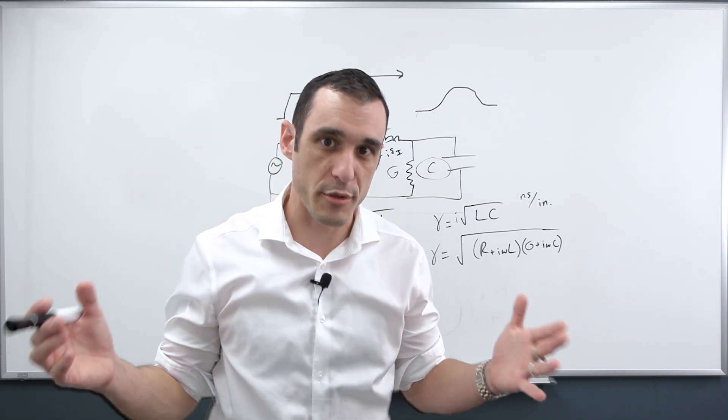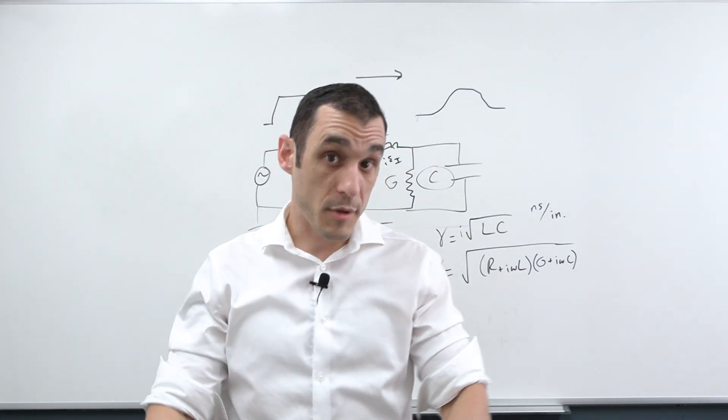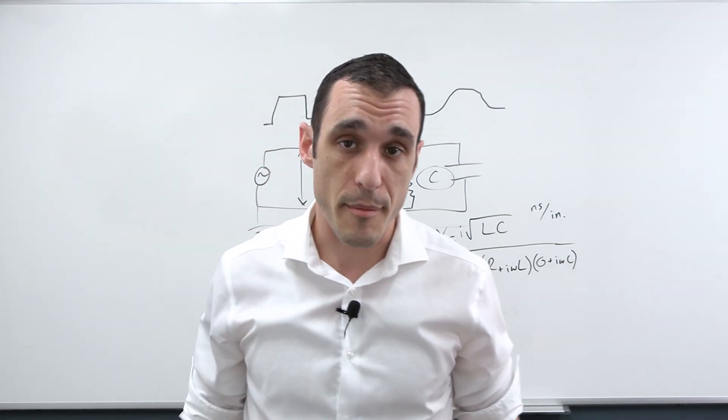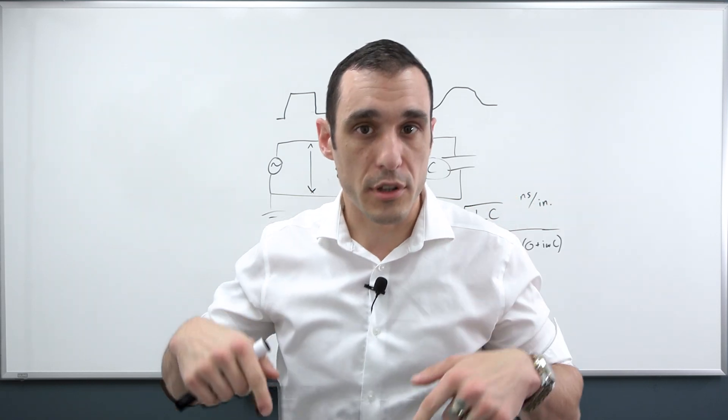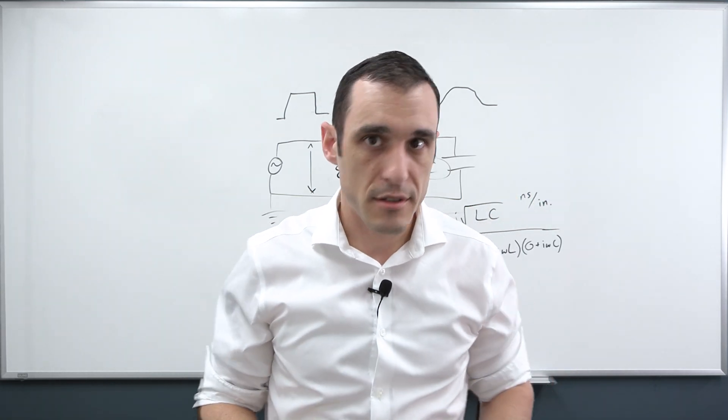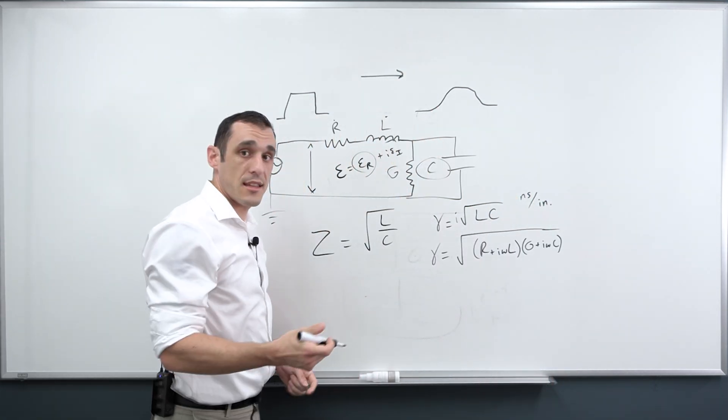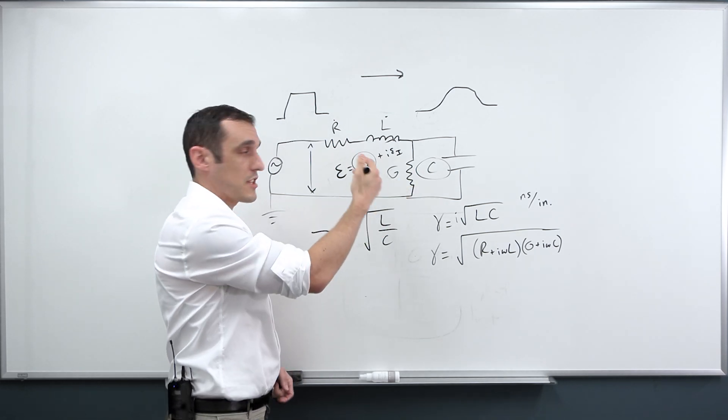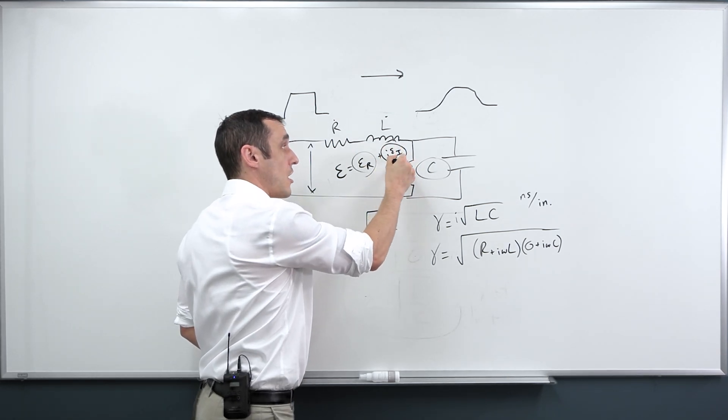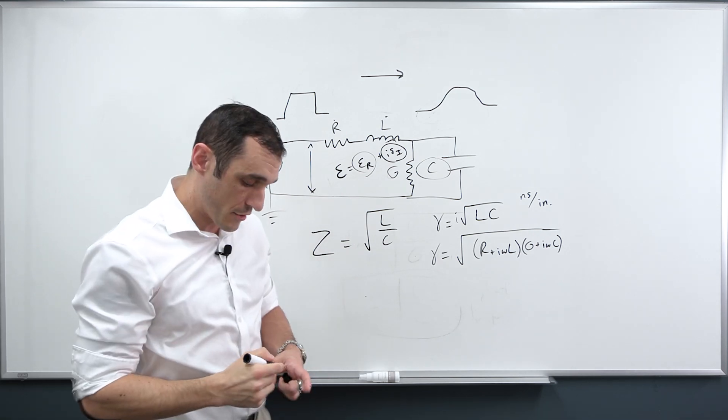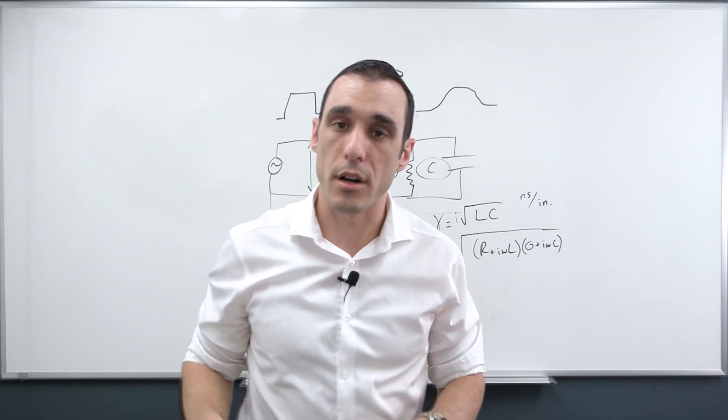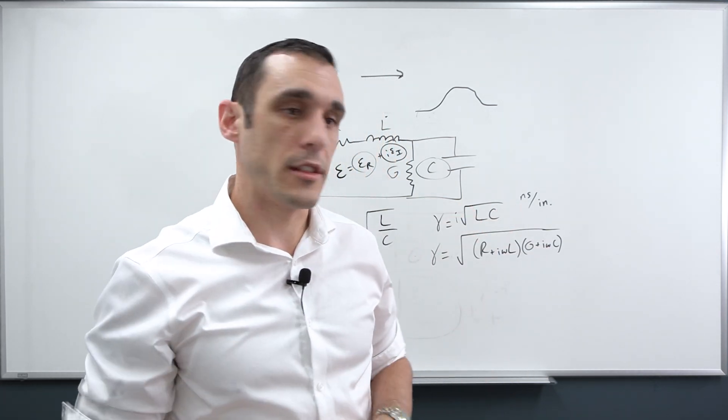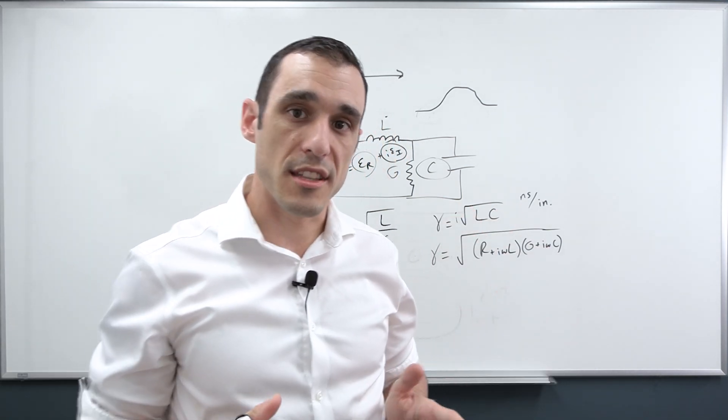And so then the natural next question is, well, how short do my traces need to be? So that's a topic we'll look at in an upcoming video because it does require a little bit of math. And if you want to learn more about it, what I'll do is I'll put a link in the blog on loss tangent. The loss tangent in a PCB substrate and on a transmission line does depend on this value in the dielectric constant. And you can go read about it in that blog. And I think that'll prepare everybody for an upcoming discussion on loss tangent and how short your trace lengths need to be.